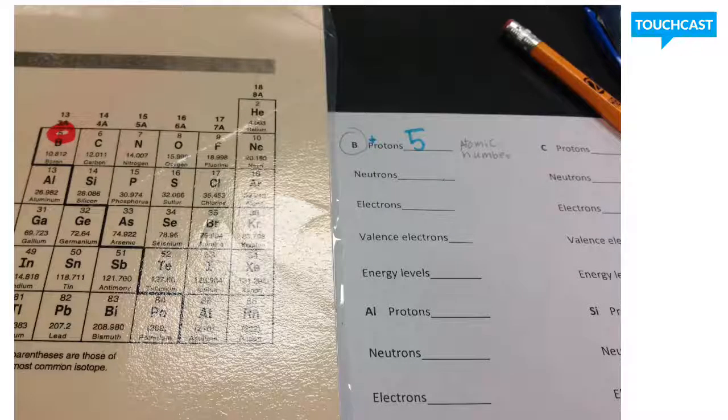Alright, the first thing we want to solve is for the number of protons. If you look there, the atomic number for boron is five, so it has five protons.